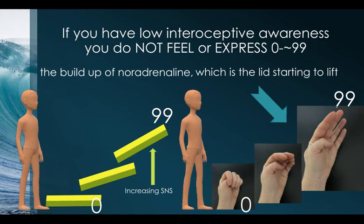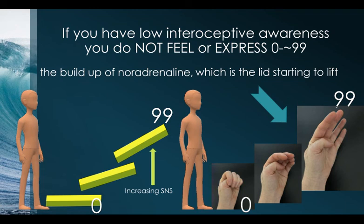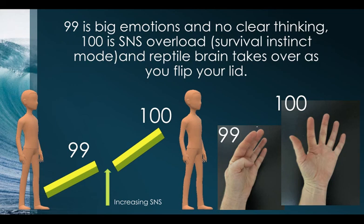Individuals with atypical interoception don't notice their zero to ninety-nine. If you're not aware of biofeedback until it's huge, you're not going to feel or express it until it is very large. The yellow-green bars in this diagram represent the autonomic nervous system — as they tilt up, that's an increase in noradrenaline driving the sympathetic nervous system. On the other side is the hand model of the brain — as noradrenaline and sympathetic activation increase, the thinking cap of the brain starts to lift off and raise up.